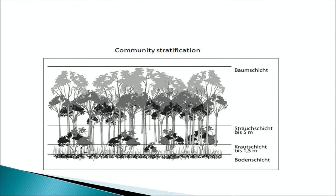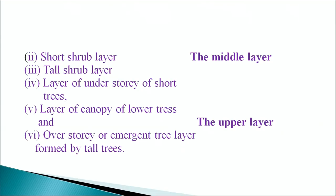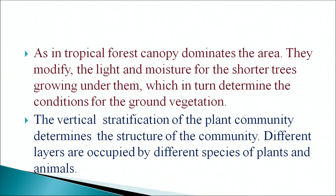In the community stratification diagram, you can see different strata: the short shrub layer, tall shrub layer, and the understory of short trees forming the middle layer. Above these is the canopy of lower trees and the overstory or emergent tree layers formed by tall trees, making the upper layer. In tropical forests, canopy dominates the area, modifying light and moisture for shorter trees growing beneath, which in turn determine conditions for ground vegetation.